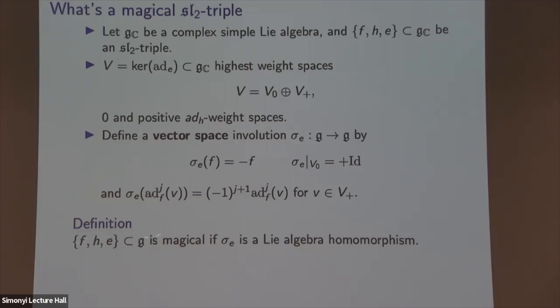Kostant actually proved in 1954 that the principal SL₂ inside a complex Lie group yields an involution that is indeed a Lie algebra involution — he didn't use this language, but Hitchin really used those properties to prove things about the Hitchin section for general groups. This is the right definition to generalize Hitchin's Slodowy slice construction to these types of SL₂ triples, so that you get open and closed subsets.